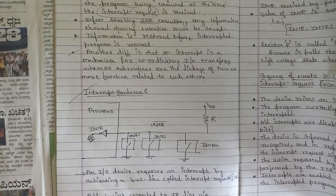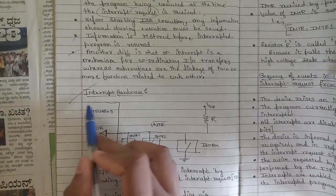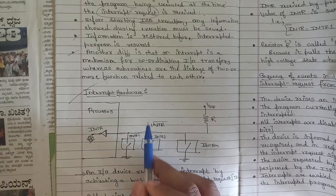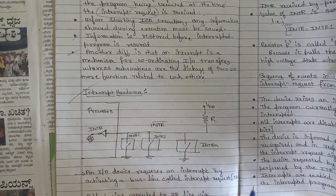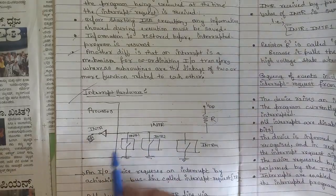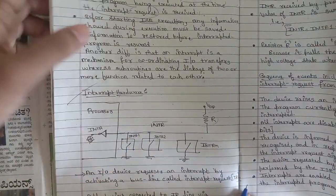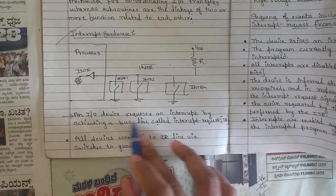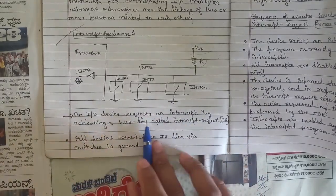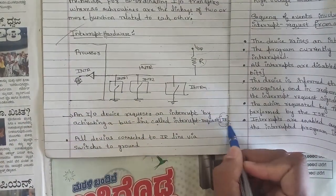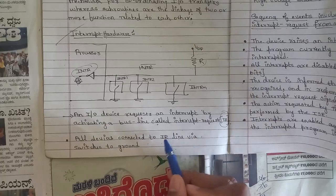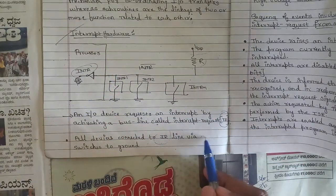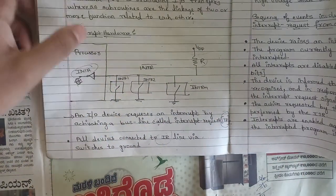One more fixed question is related to interrupt hardware. You should draw a diagram showing the processor, interrupt request line, interrupt routine, and blocks connected in series with a resistor and source voltage. An input/output device requests an interrupt by activating the bus line called the interrupt request line, abbreviated INTR. All devices are connected to this IR line via switches to ground.